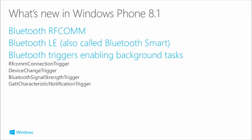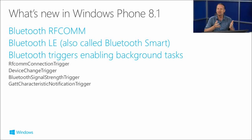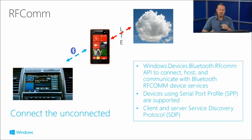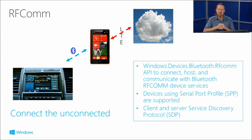So what's new then? RFComm, Bluetooth LE which is also called Bluetooth Smart, and actually the most exciting thing is some triggers. This is really the magic that allows interesting stuff to happen, because it means your foreground app doesn't need to be running in order for your app to be able to interact with a Bluetooth LE device. RFComm is kind of almost for more legacy Bluetooth services, ones that understand RFComm protocols, which is this serial port profile.